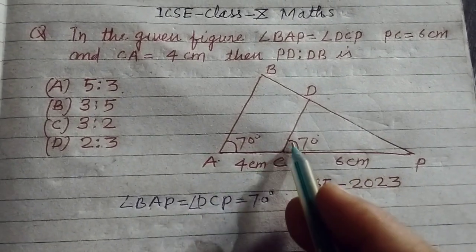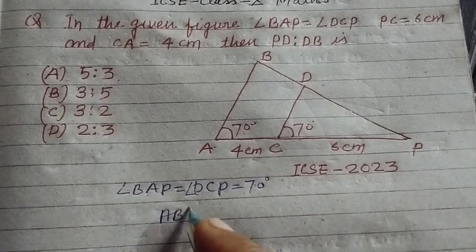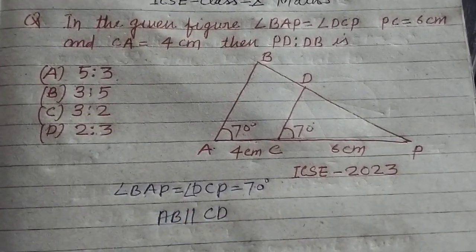Therefore, since this angle equals this angle, then AB is parallel to CD.